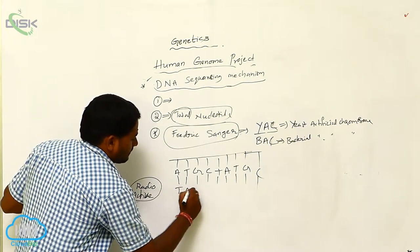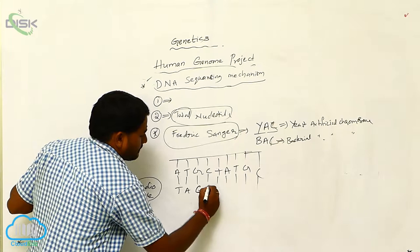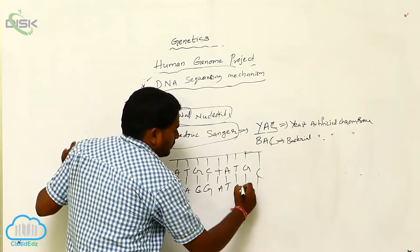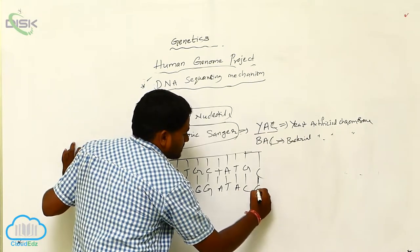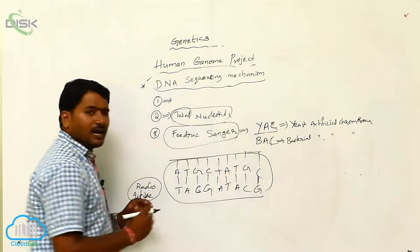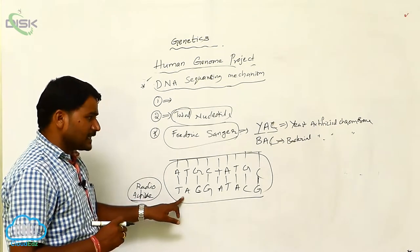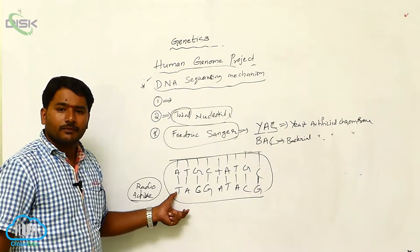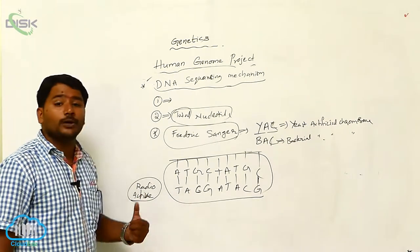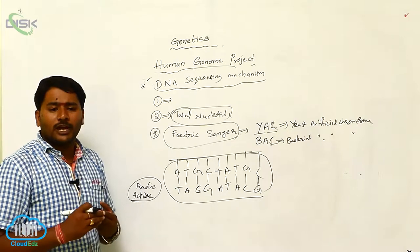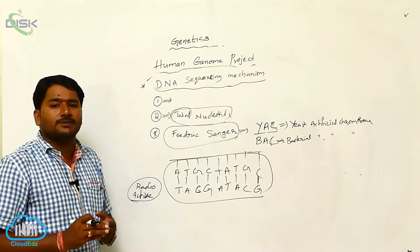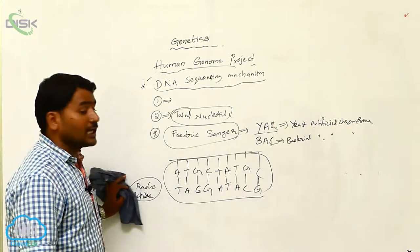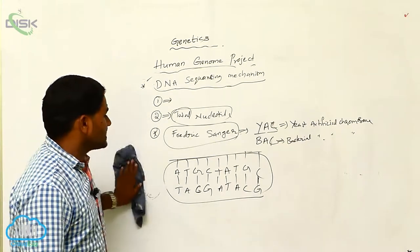A pairs with thymine, T pairs with adenine, G pairs with cytosine, C pairs with guanine. These are the complementary base pairs. They are produced artificially and all of these are radioactive substances. Radioactive substances can be easily observed under the microscope or photographic plate illuminator. This is Sanger's method.